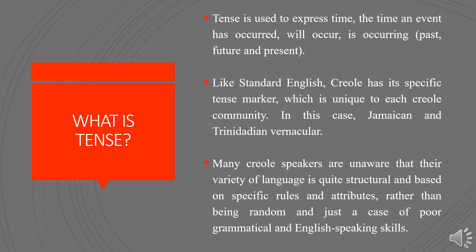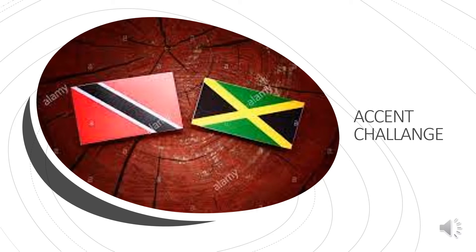It has been stated that Creole in general has a set of pre-verbal markers which fall into three categories: anterior tense, which is an action that has been completed before starting something new; irrealis tense, which is an action that has occurred unbeknownst to the speaker; and non-punctual tense. Like Standard English, Creole has specific tense markers unique to each Creole community — in this case, Jamaican and Trinidadian vernacular. Many Creole speakers are unaware that their variety of language is quite structural and based on specific rules, rather than being random or poor grammatical English speaking, which they have been conditioned to believe. Using a small demonstration, we will highlight how tense compares in Jamaican Creole and Trinidadian Creole to their English lexifier through an accent challenge.